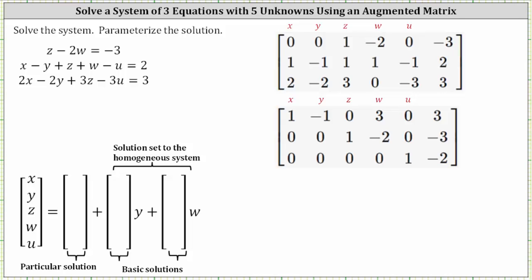We're asked to solve the system and parameterize the solution, then express the solution in the form shown below. Notice how we have three equations and five unknowns. To solve the system, we will set up a three by six augmented matrix and then write the augmented matrix in reduced row echelon form.